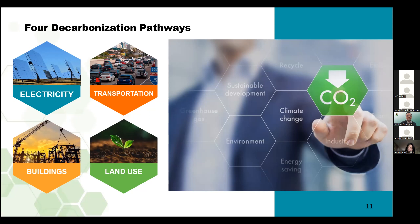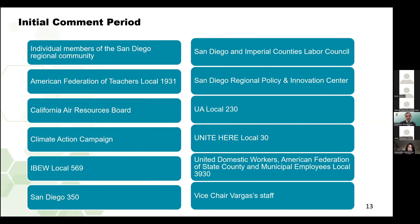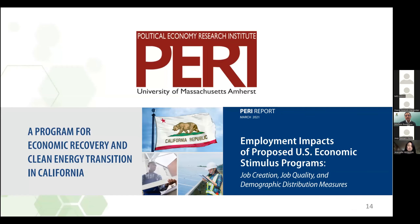Esta presentación se centrará en los impactos de la descarbonización en el empleo, así como en las estrategias de desarrollo de la fuerza laboral para garantizar que nuestros trabajadores locales se beneficien de esta transformación de la economía inducida por el clima. Actualmente estamos en la fase de desarrollo de políticas y programas y hay un periodo de comentarios abierto para los informes técnicos y laborales que está abierto hasta el 31 de mayo. Comenzaré con los puntos clave de empleo, capítulo 6, titulado Impactos en el empleo del RDF para la Región de San Diego, escrito por PERI en UMass Amherst.